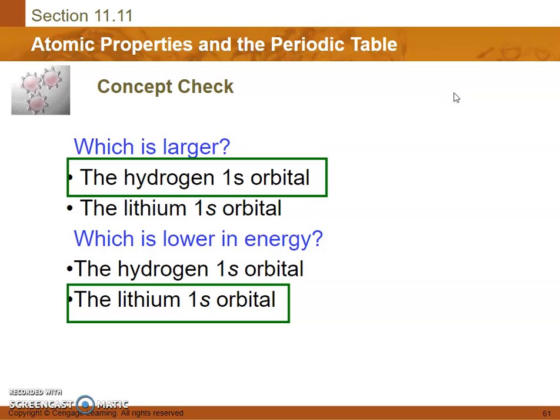Which is larger? The hydrogen in the 1s orbital or the lithium in the 1s orbital? Well, hydrogen, because it's not holding as tightly to that electron. It's going wherever it wants. Lithium has a very tight hold on its electrons comparatively, which is lower in energy than lithium 1s orbital, because it's holding very tightly to that electron.